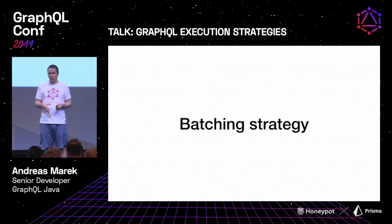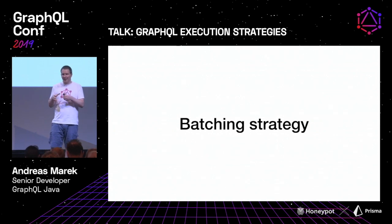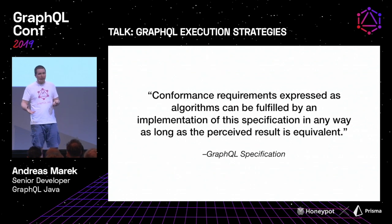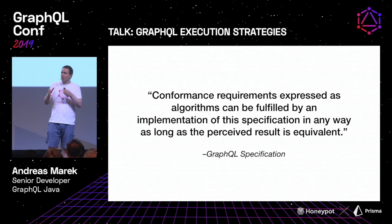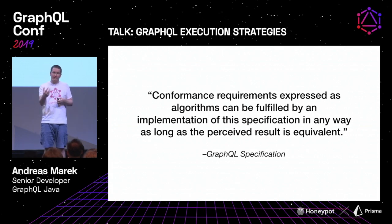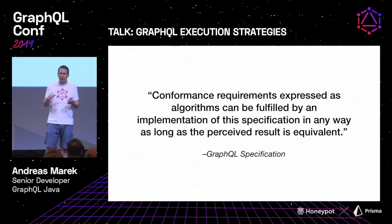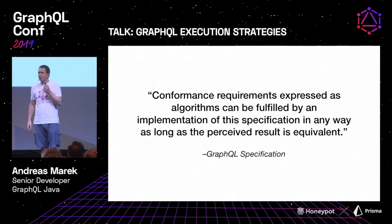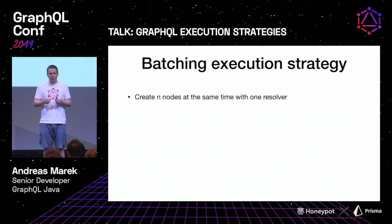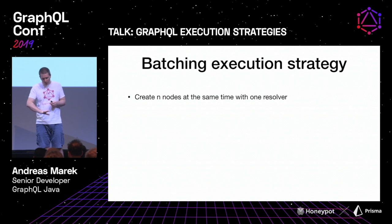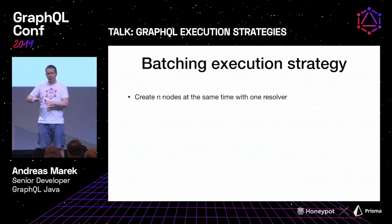There's another way to attack this problem, and this is where we leave the specified area a little bit. This is probably the most underrated sentence in the GraphQL specification: it tells you that you can do anything you want as long as the perceived result is equivalent. So as long as the user doesn't know what you're doing, you can implement your execution strategy in any way possible.